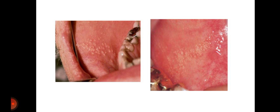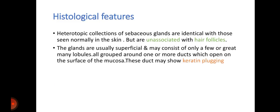Because of the high incidence of these glands in the oral cavity, they may be regarded as a sebaceous nevus rather than ectopic glandular tissue. Discussing the histological features: these heterotopic collections of sebaceous glands are identical with those normally found in the skin, but are unassociated with the hair follicles. Rarely, hair follicles are present.